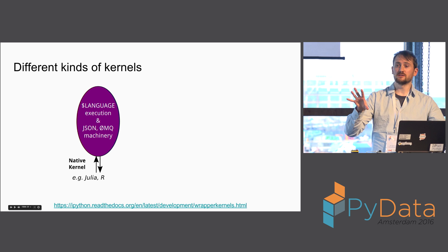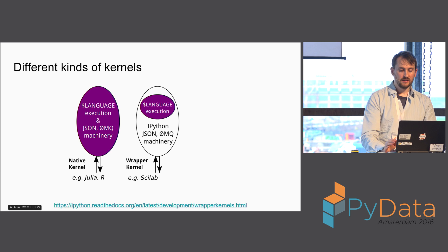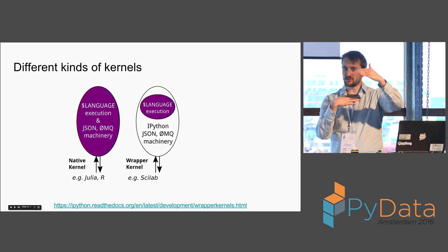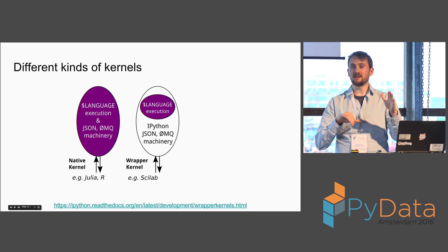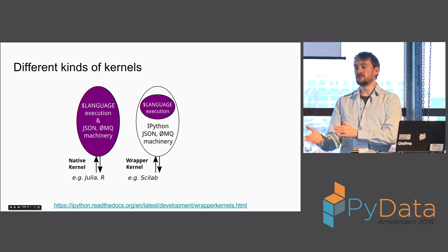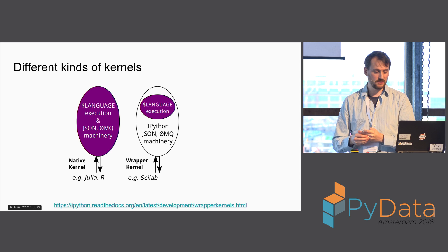The IPython package has taken its implementation of the message protocol — this is work that Thomas mostly did — and put it in a simple base class. So you can write what we call a wrapper kernel. We've got a Python object that implements the message protocol, and this kernel class defines a few methods like do_execute and do_completion. All you need to do is subclass that and define those one, two, or three methods, and then you've got a kernel. If you know how to run code in your language with a Python API call, you can quickly get up and running with a kernel for your language or application.